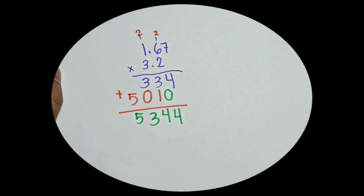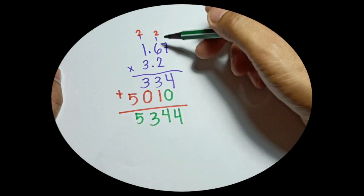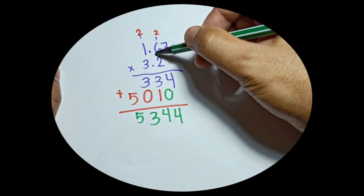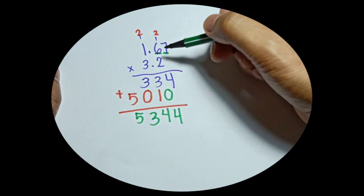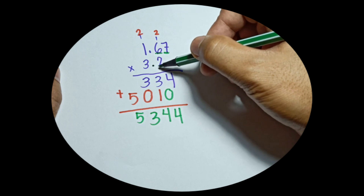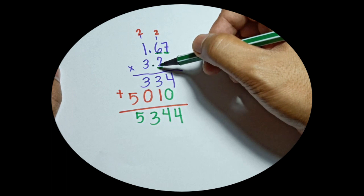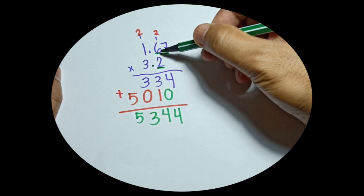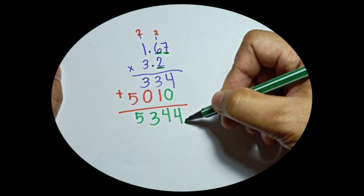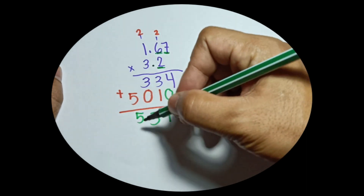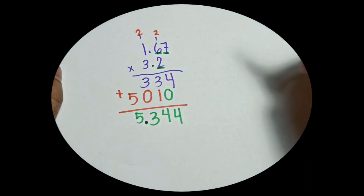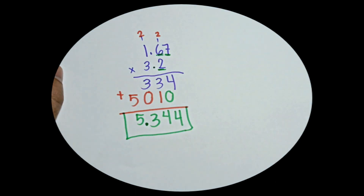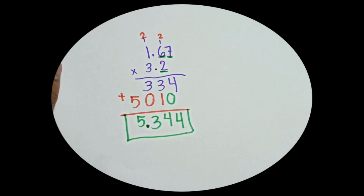Now the question is where to put the decimal point. In the first number (the multiplicand) there are two digits after the decimal point — that's 6 and 7, so that's 1 and 2. In the multiplier there is one digit after the decimal point — that's 2, counted as 1. So count them all together: 1, 2, and 3. From the last digit of your answer, count 3 places: 1, 2, 3 — and place your decimal point there. So the answer when you multiply 1.67 by 3.2 is 5.344.